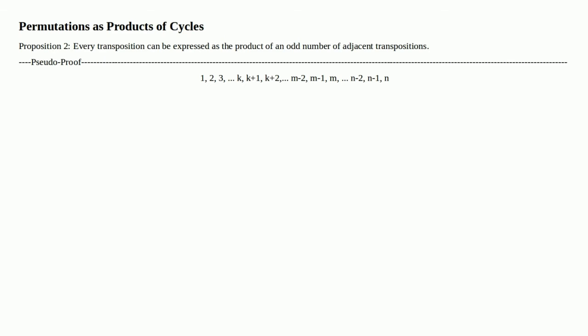Observe the following. Here we've just listed all the numbers in order: 1, 2, 3, all the way to K, then moving beyond K all the way to M, and then moving beyond that all the way to N. Notice the position of K and M, and notice M next to M minus 1.